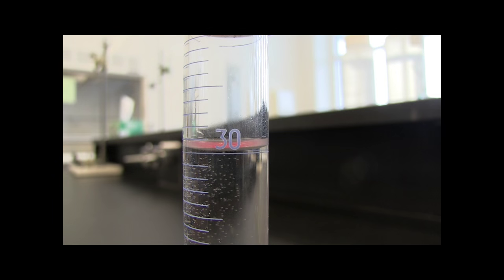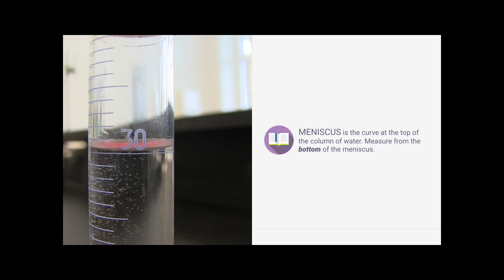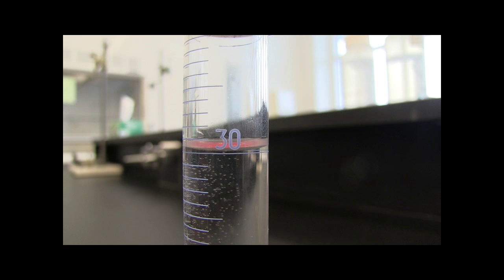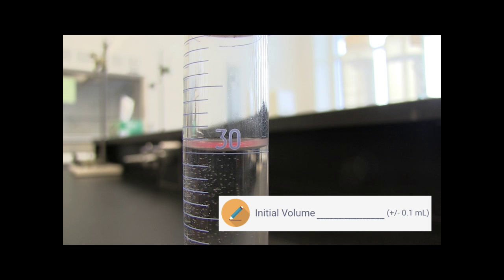One more thing, you need to know what a meniscus is. If you look at the column of water in the cylinder, you'll notice that the top part is curved slightly. This curve is called the meniscus. When you do your measurements, make sure to measure from the bottom of the meniscus. So for this example, 30.0 milliliters is our initial volume.